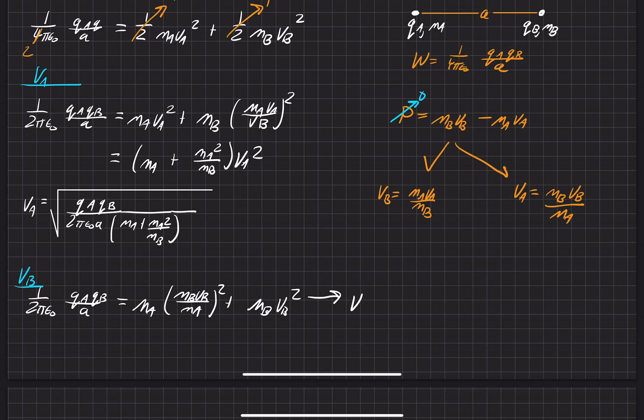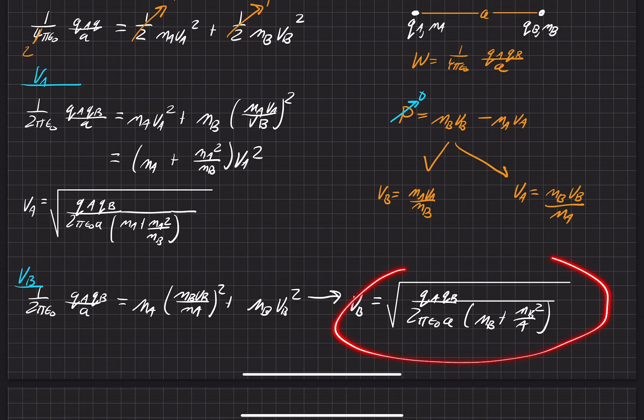Let's do this. vᵦ is equal to the product of the two charges over 2πε₀a times our sum that we have here. All right. Extend this out a little bit. All right. And there is our velocity for B, vᵦ.